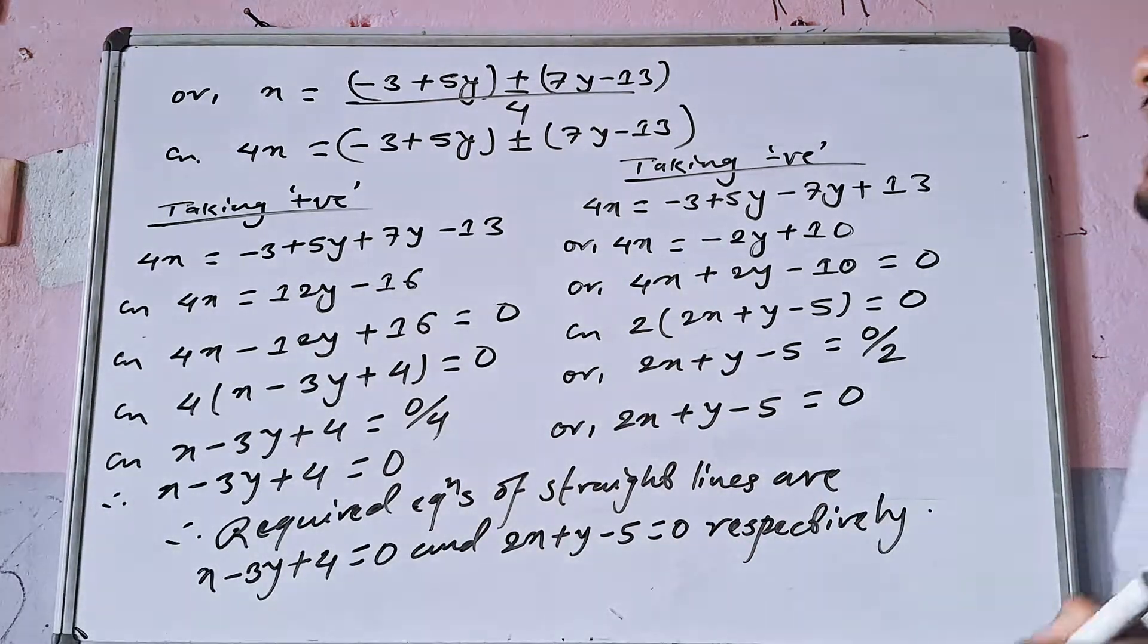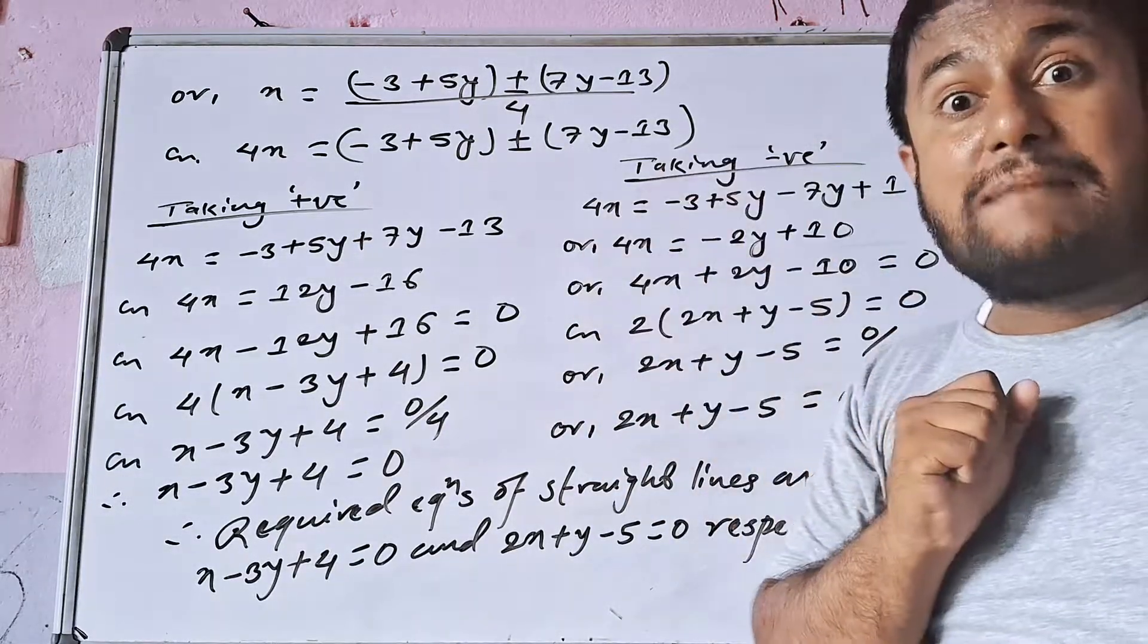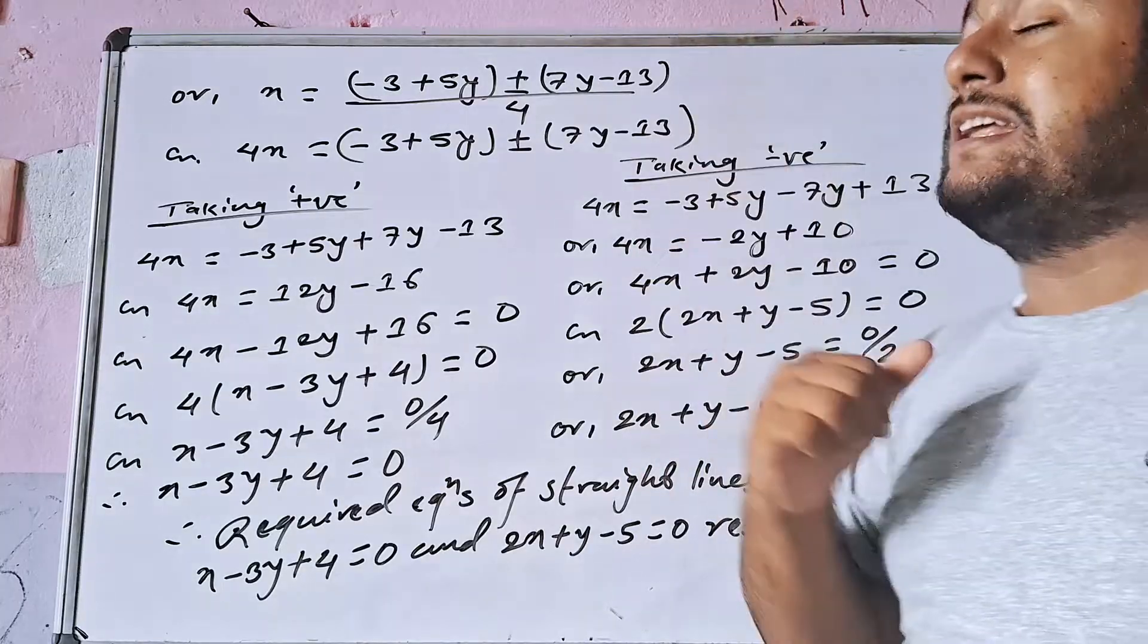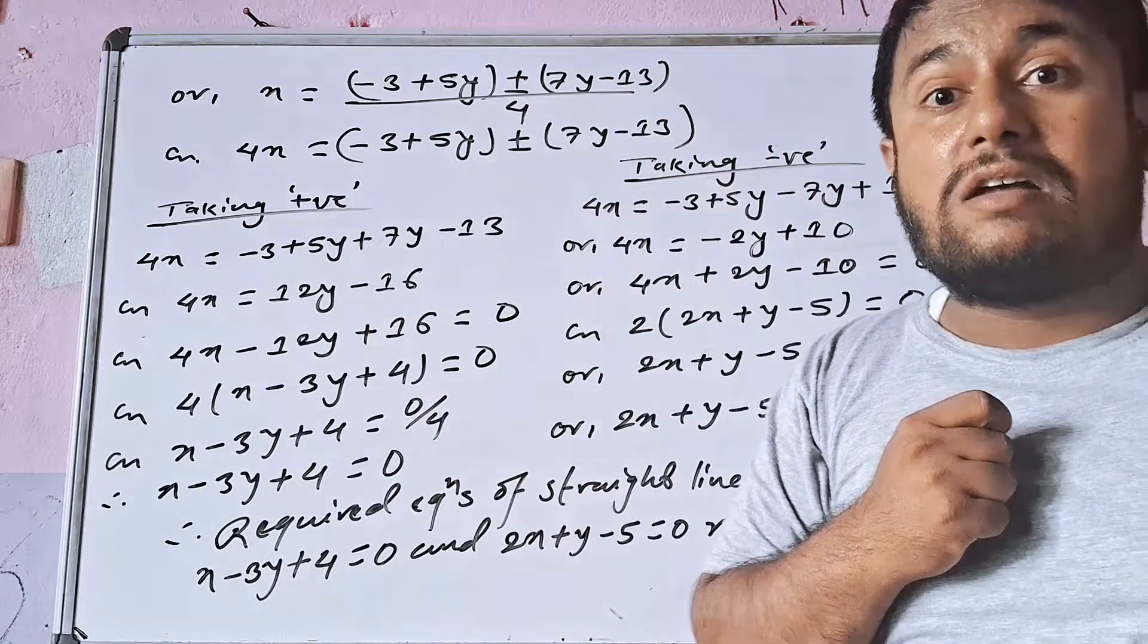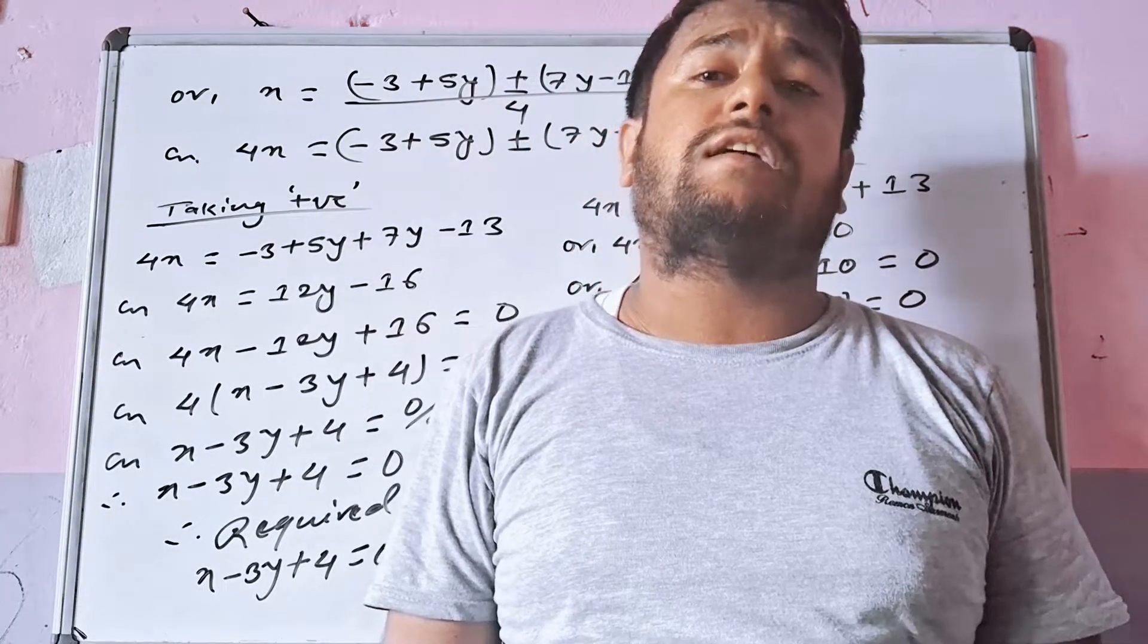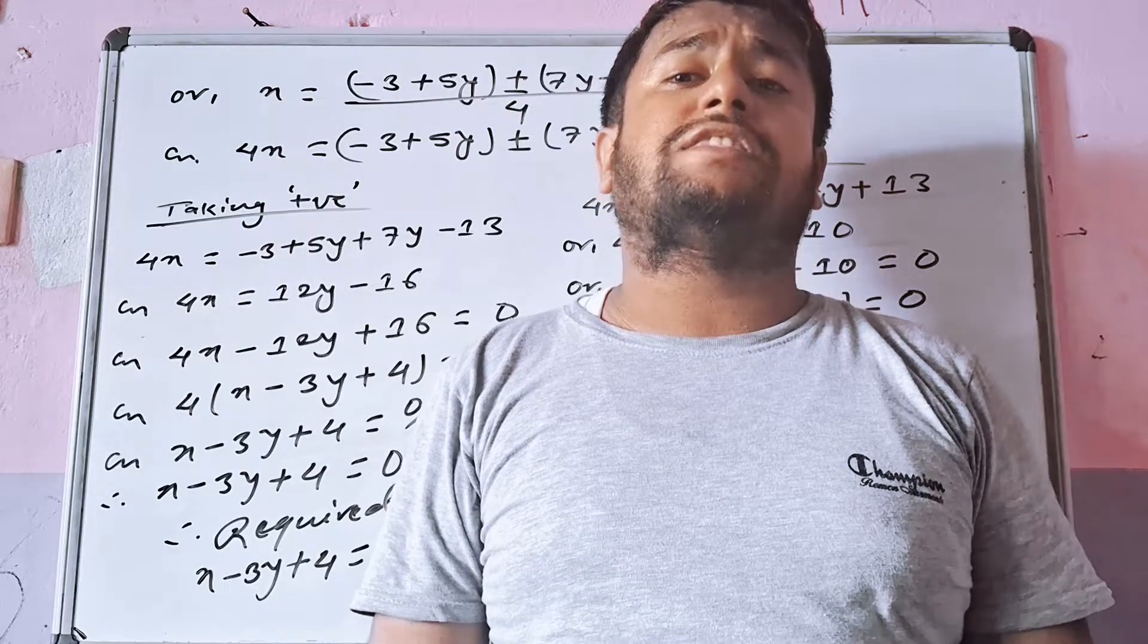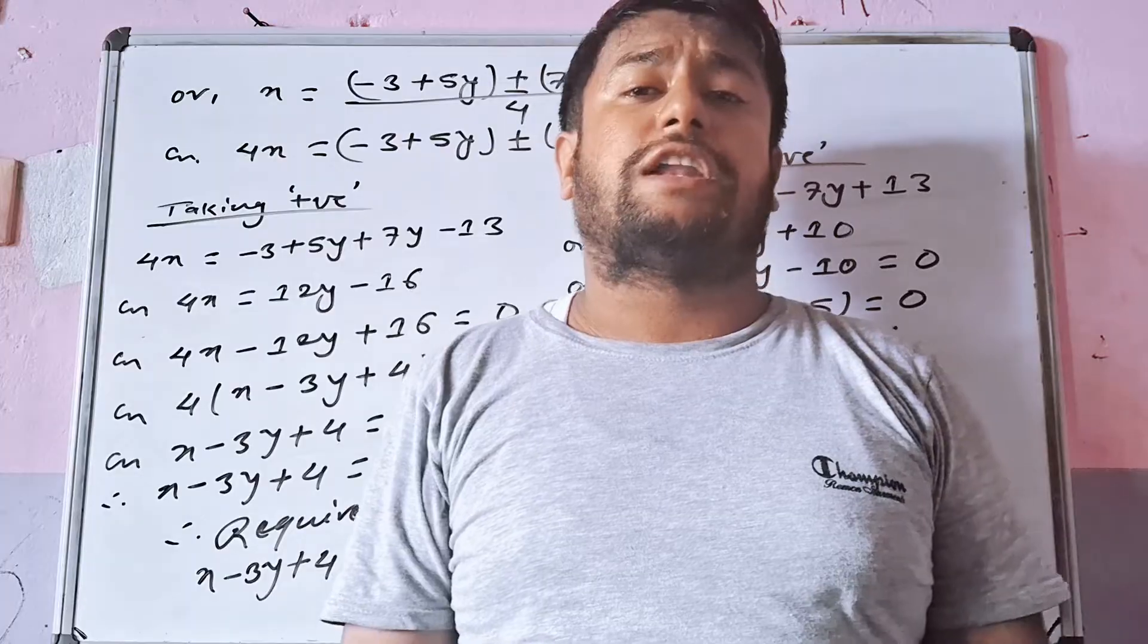This is the solution to the equation. When we could not factorize the equation directly, we used the quadratic formula method to find the pair of straight lines.